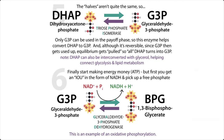Everything in this pathway from now on is going to be repeated two times because we split the molecule in half — once for the half that was originally G3P and once for the half that was DHAP. The first thing you need to do is phosphorylate the other end again. In this case, we're actually adding a phosphate group — a phosphorus with four oxygens. This is an oxidation reaction, so we use NAD+, and this is going to generate NADH.